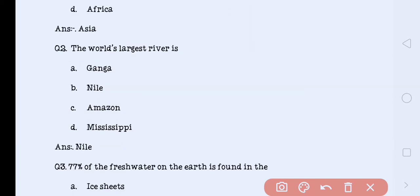The world's largest river is Ganga, Nile, Amazon or Mississippi. The correct answer is Nile. Nile is the world's largest river.